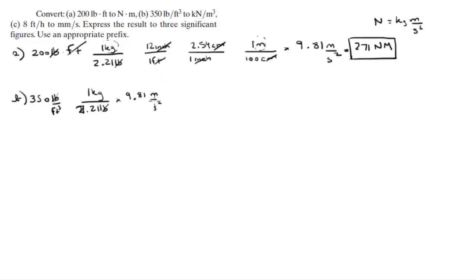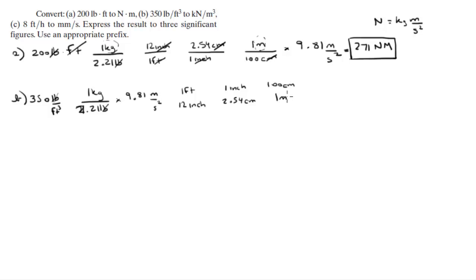Now handle the feet in the denominator: in one foot there are 12 inches, in one inch there are 2.54 centimeters, and in 100 centimeters there is one meter. However, since you have cubic feet, this conversion must be cubed.